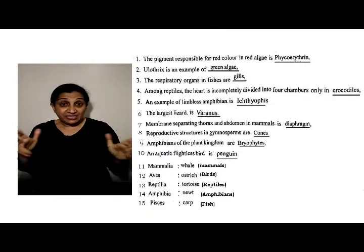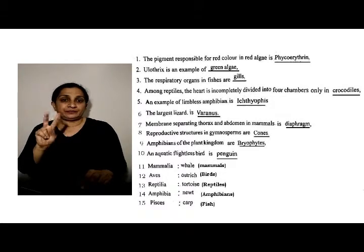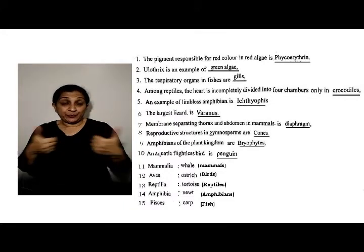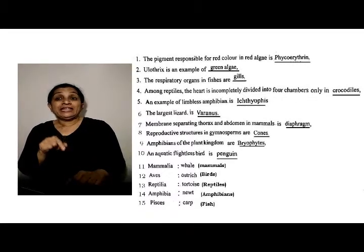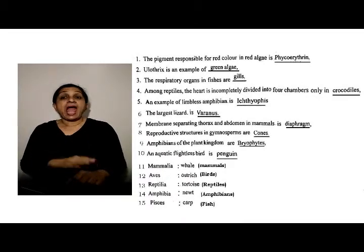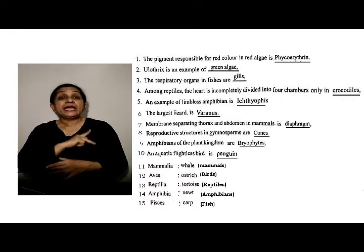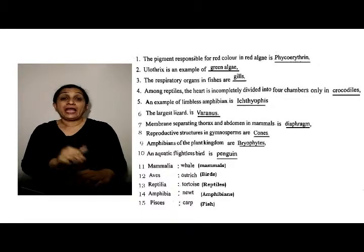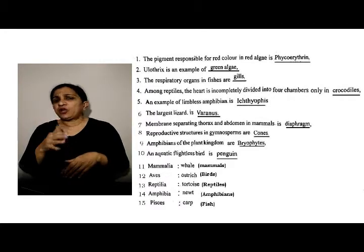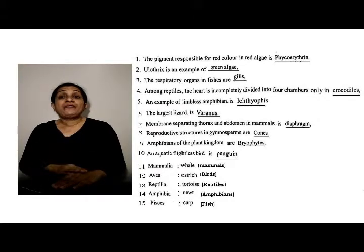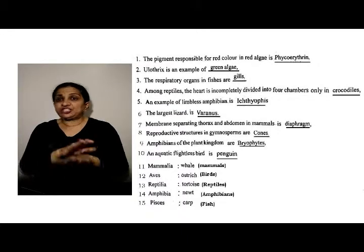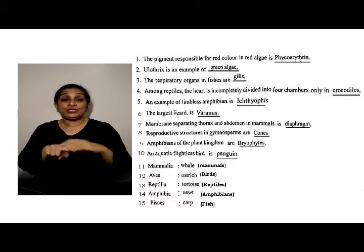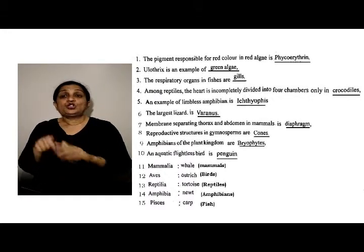An example of an amphibian with no limbs is Ichthyophis. The largest lizard is Varanus. The membrane that separates the thorax and abdomen in mammals is the diaphragm. The reproductive structures in gymnosperms are cones. Amphibians of the plant kingdom are bryophytes. The aquatic bird that cannot fly is a penguin. Whale is a mammal, not a fish. Ostrich is a bird. Tortoise is a reptile.